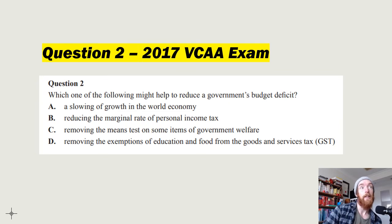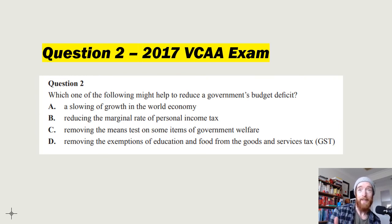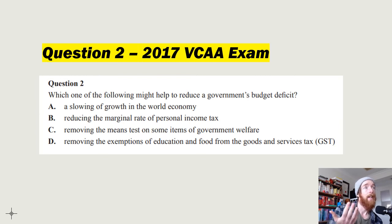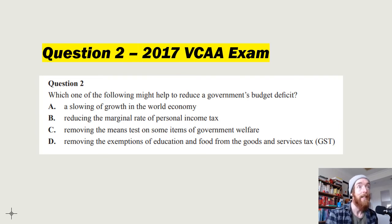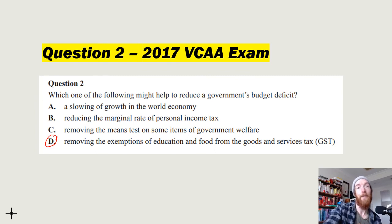Question 2 from the 2017 VCAA exam: 'Which of the following might help reduce a government's budget deficit?' A — slowing world economy: less exports, less tax revenue, won't help. B — reducing marginal rate of personal income tax: less revenue, won't help. C — removing means tests on welfare: more welfare access, won't help. D — removing exemptions of education and food from the GST: applies GST to more goods, increases revenue, reduces the deficit. Answer: D.